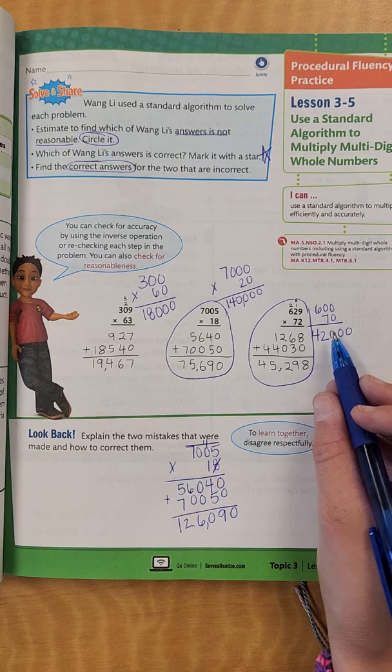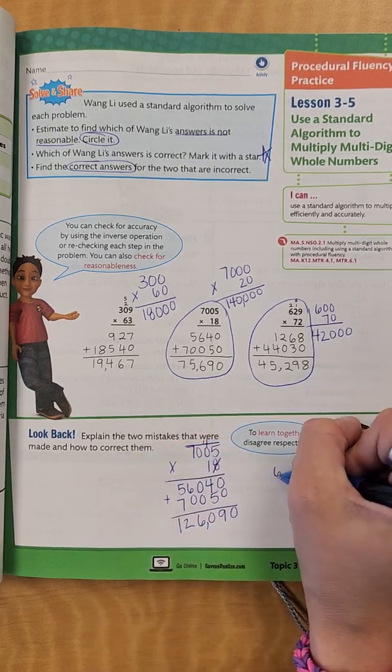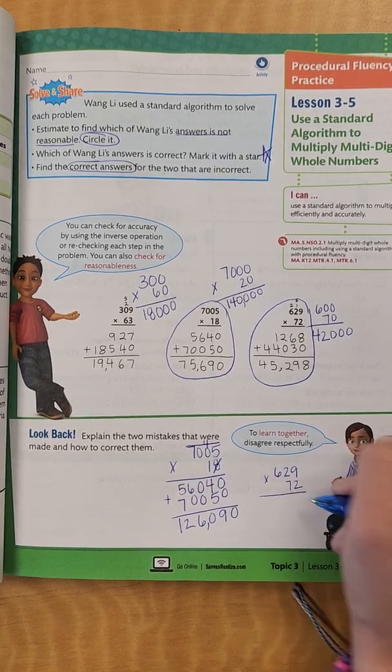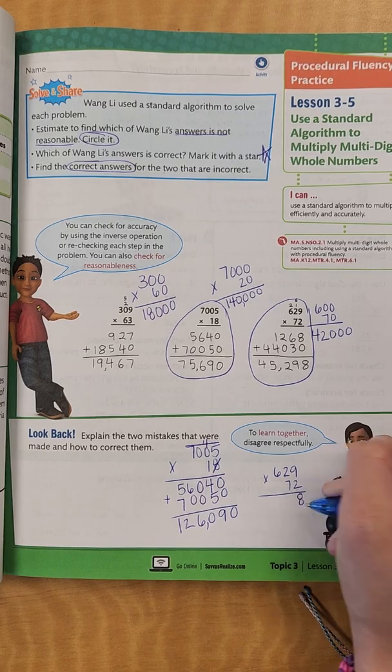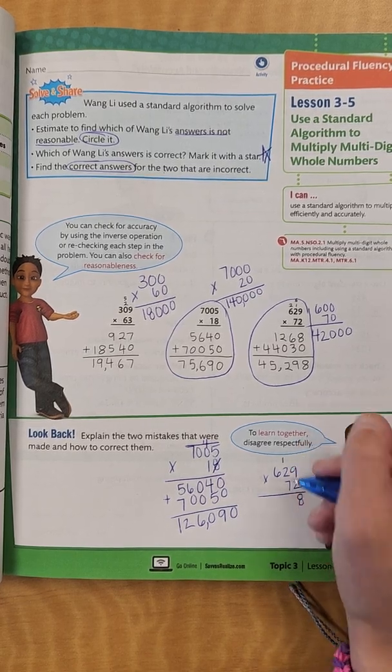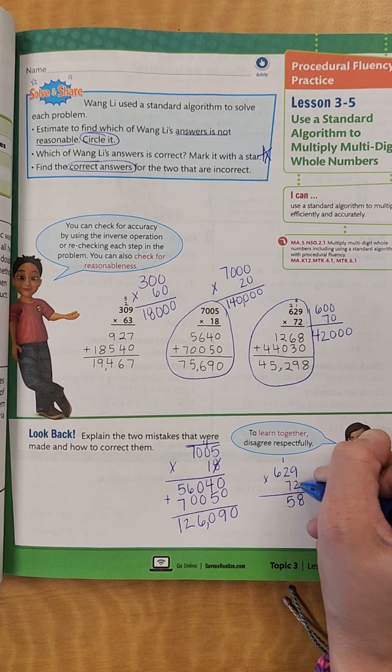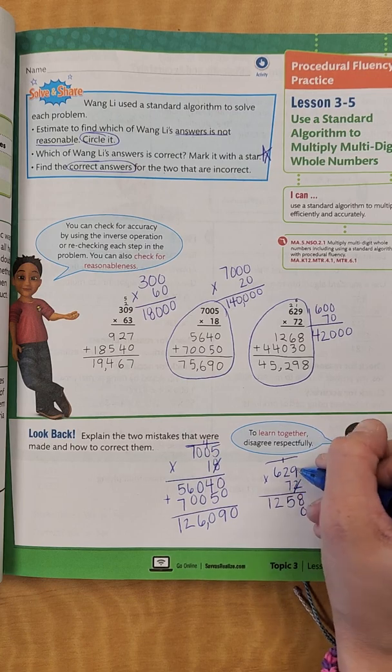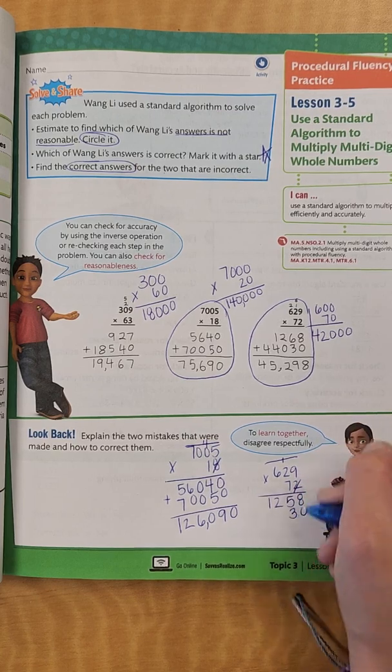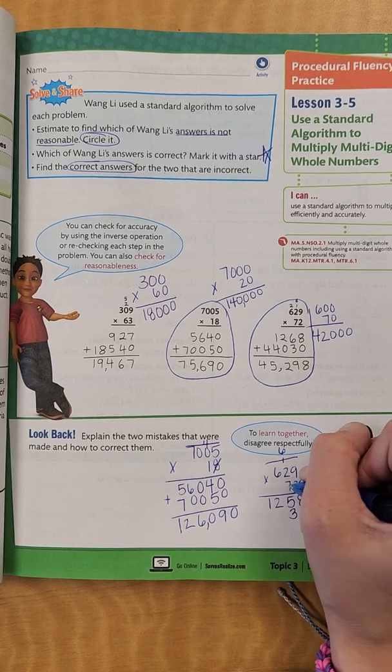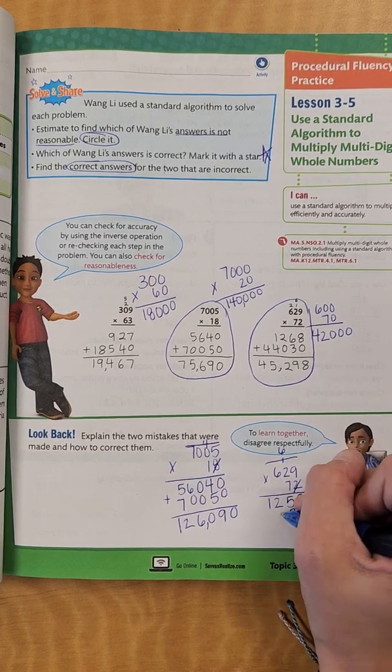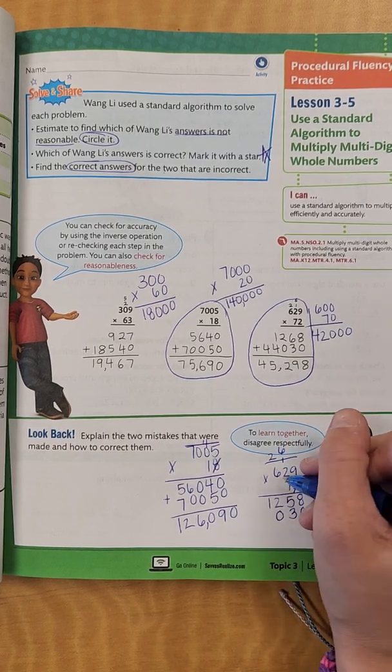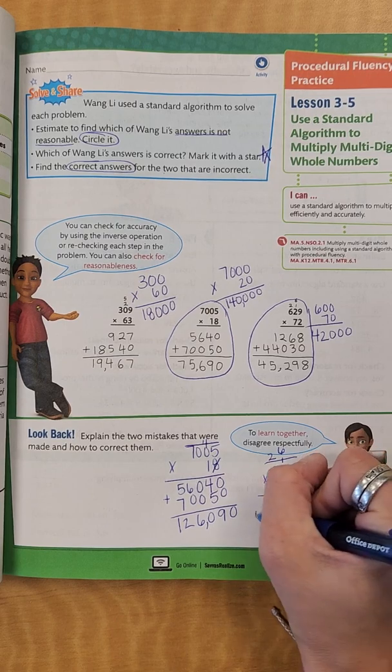This one seems like it might not be as reasonable, so I'm going to re-work that problem. So 629 times 72. I know that 9 times 2 is 18, regroup. 2 times 2 is 4, plus 1 is 5. 2 times 6 is 12. Put down my 0, cross out my 2. 7 times 9 is 63, put down my 3, regroup my 6. 7 times 2 is 14, plus 6 is 20, put down my 0, regroup my 2. 7 times 6 is 42, plus 2 is 44.